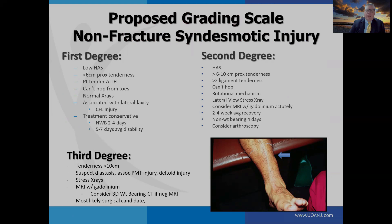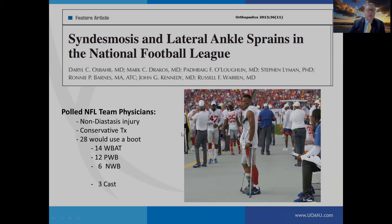Third degree: tenderness is greater than 10 centimeters. You should suspect latent diastasis. These are associated with posterior medial tenderness of the tibial tubercle. Deltoid injury is associated with this. Consider stress x-rays, MRI, and in some cases a 3D CT scan or weight-bearing CT, which is receiving more attention in the literature.